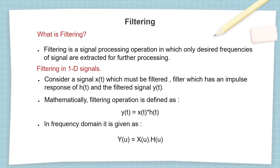Mathematically this can be represented as y equals x convolved with h. Whereas in the frequency domain the same is represented as y equals X dot product with H. This is because convolution in the time domain can be represented as multiplication of individual elements at a particular frequency in the frequency domain.